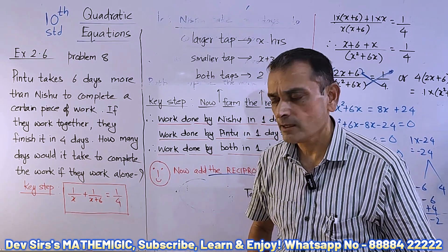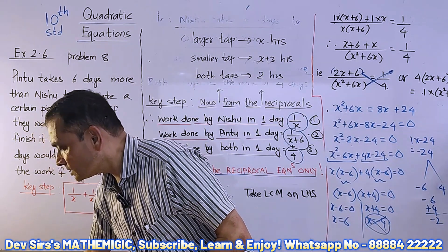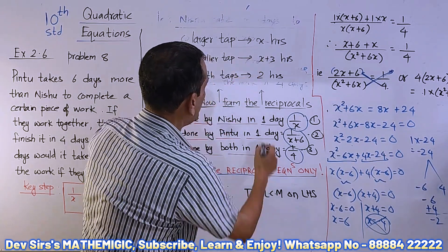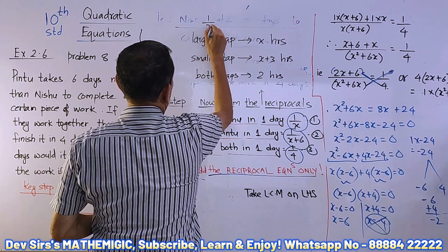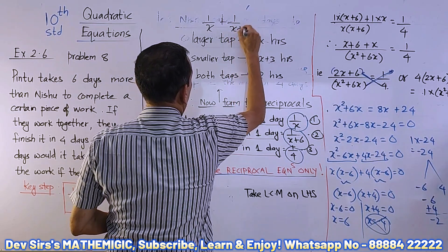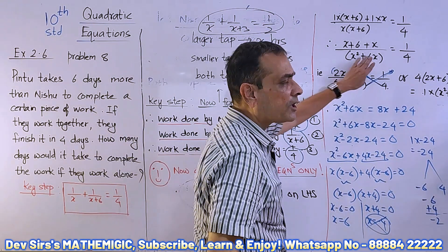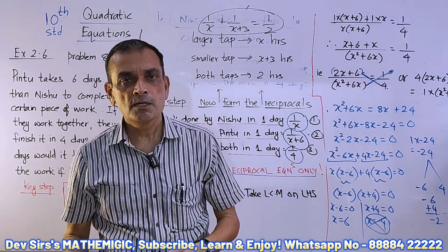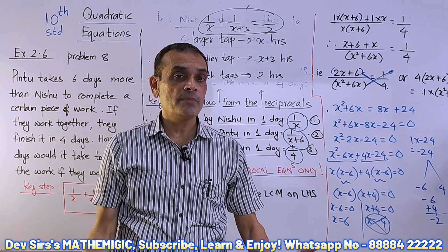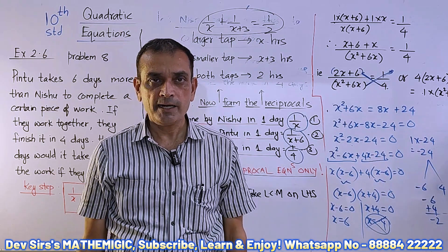So the equation becomes: 1/x + 1/(x+3) = 1/2. Take the LCM, form a quadratic equation, and solve. These are similar sums — both problems are based on how to take reciprocals and why. Both the problems are based on the same logic.